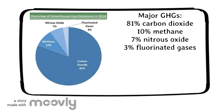The major greenhouse gases' emissions contain 81% carbon dioxide, 10% methane, 7% nitrous oxide, and 3% fluorinated gases.